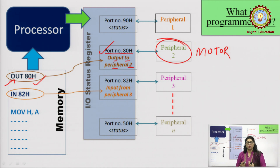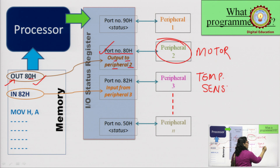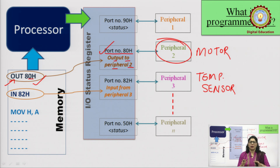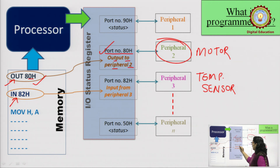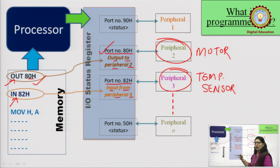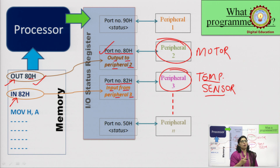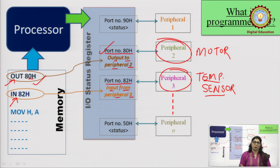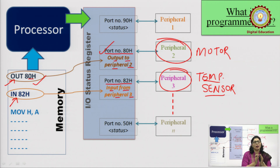Similarly, if I want to take an input of data — let's say peripheral 3 has a temperature sensor connected, and after every half an hour I need to take that signal inside the processor to track how the room temperature varies. Here we give the instruction 'IN 82H'. Port address 82H belongs to the port where peripheral 3 is connected, and it is 'input from peripheral 3' — whatever value the temperature sensor has, that value will come to our accumulator. This is how input and output communication is done with the outside world. The I/O status register helps the processor understand the status of each peripheral connected at every address.